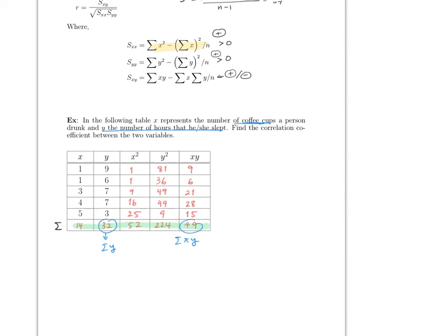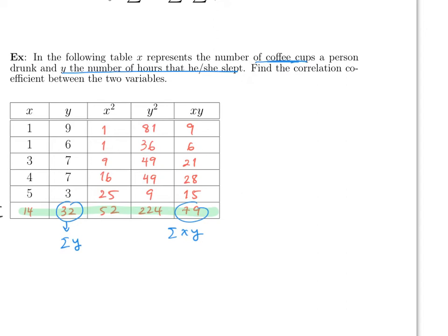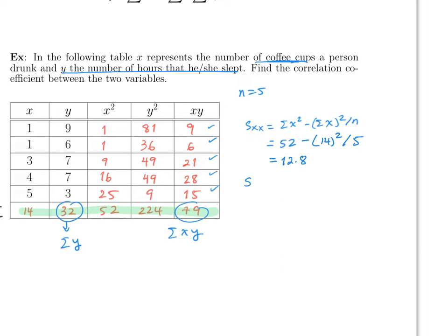Once the table is complete, the sums are: sum of x = 14, sum of y = 32, sum of x² = 52, sum of y² = 224, sum of xy = 79, and n = 5. Now compute S_xx: sum of x² minus (sum of x)² divided by n, which is 52 minus 14² divided by 5, giving approximately 12.8. This must be positive — it is.